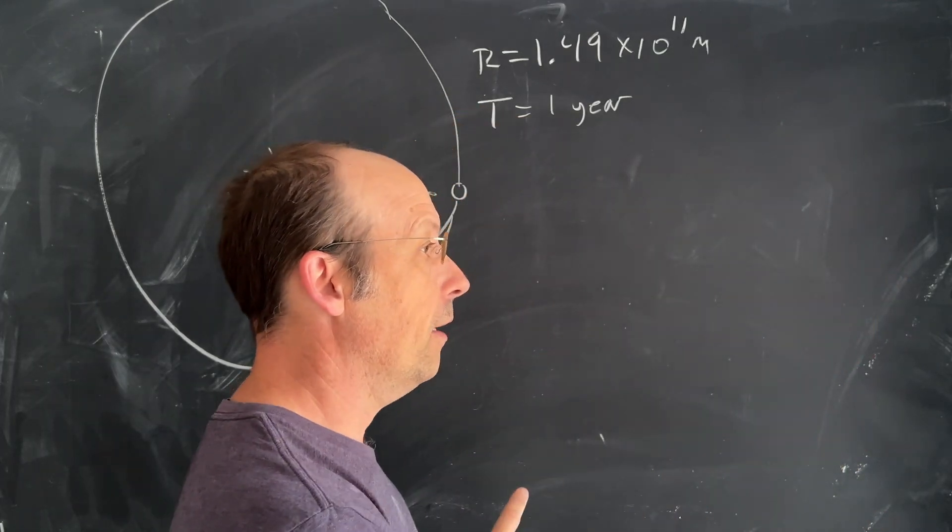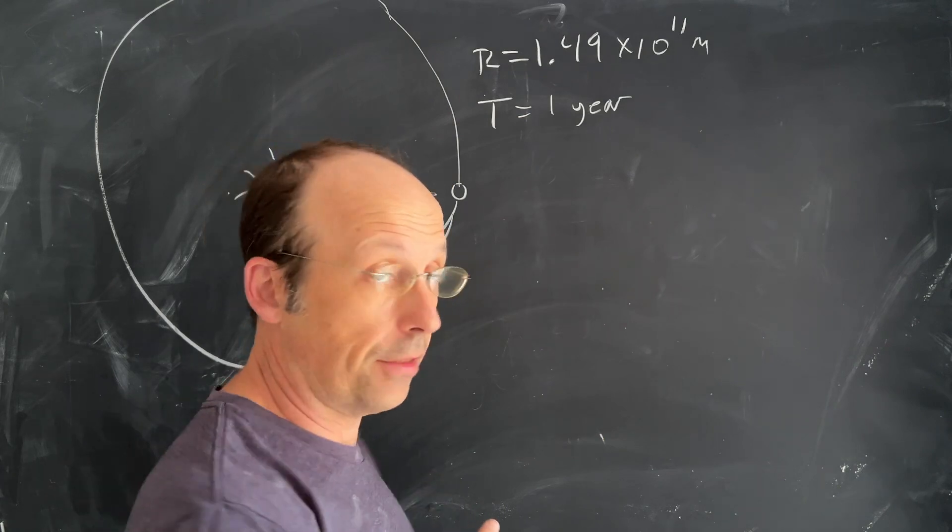Example problem: What is the speed of the Earth as it goes around the Sun?